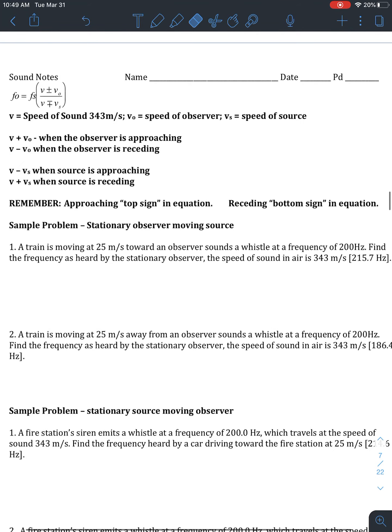Okay. So in our first problem, we have a train moving 25 meters per second towards the observer. And it's sounding a whistle at a frequency of 200 hertz. So sometimes for these, if it's hard to see what thing is moving which way, it's good to draw the picture.